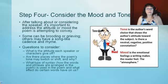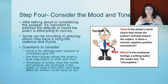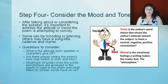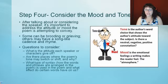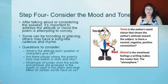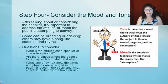Step four: consider the mood and the tone. Tone comes from the head — it is the author's word choice that shows the author's attitude toward their subject. Is there a neutral, negative, or positive connotation? Mood comes from the heart — it's an emotional feeling that the writing makes the reader or the audience feel. It's the atmosphere.